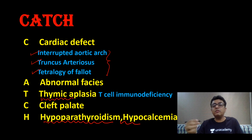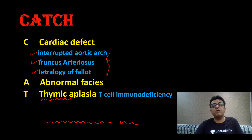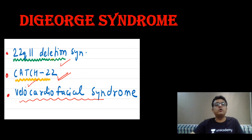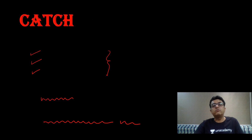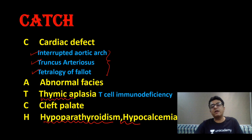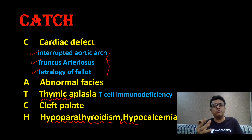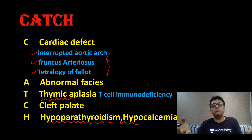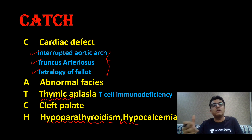These are the few points you need to remember about these classical syndromes. Today we have covered Williams, Fragile X, and DiGeorge syndrome. For DiGeorge, remember the CATCH mnemonic and that deletion occurs at 22q11. For Williams, deletion occurs at 7q11. So CATCH stands for: Cardiac defect, Abnormal facies, Thymic aplasia, Cleft palate, and Hypoparathyroidism with hypocalcemia. Go through my previous classes on Down syndrome, Turner, and Klinefelter — each class is only 15 minutes.